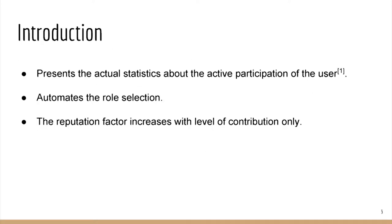So what is reputation? Reputation is nothing but the image of a user in a particular society. In the system of collaborative communities, reputation is the active participation of the user. This reputation is used to change the roles of a particular user — from author to publisher and publisher to admin. This is done automatically, and the reputation factor is solely based on the contribution made by that user.